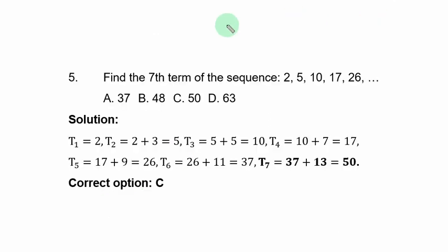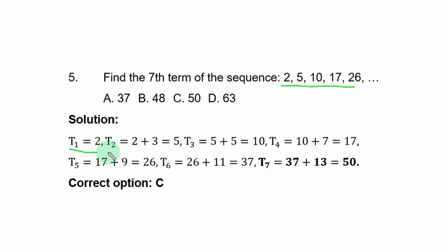Question 5: find the seventh term of the sequence 2, 5, 10, 17, 26, … You identify the pattern from the first few terms. The first term is 2; to get the second term, add 3: 2 + 3 = 5; to get the third term, add 5: 5 + 5 = 10.